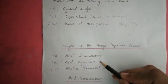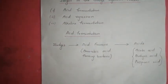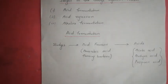Now we will discuss the stages in the sludge digestion process. There are mainly three stages: acid fermentation, acid regression, and alkaline fermentation. In the first stage — acid fermentation — the fresh sludge begins to be acted upon by anaerobic and facultative bacteria called acid formers.